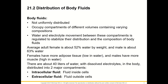The distribution of body fluids is not uniform. Body fluids occupy compartments of different volumes containing various compositions. Water and electrolyte movement between these compartments is regulated to stabilize their distribution. The average adult female is about 52% water by weight, and the average adult male is about 63% water by weight. There are about 40 liters of water with dissolved electrolytes in the body, distributed into two major compartments: the intracellular fluid and the extracellular fluid.